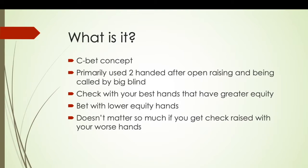Is the opponent aggressive? Is he likely to check-raise you? Essentially the concept revolves around betting with your lower equity hands. Say you open from the button and you've got king-seven or king-nine — you often want to be betting those, because if you get check-raised you don't really mind folding them out. They don't necessarily have as good equity as your king-queen or king-ace, and that's the primary idea behind reverse hierarchy betting.